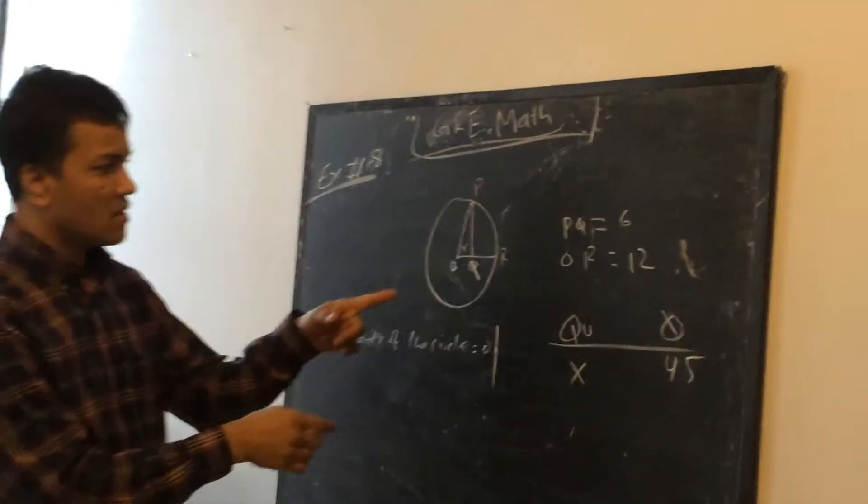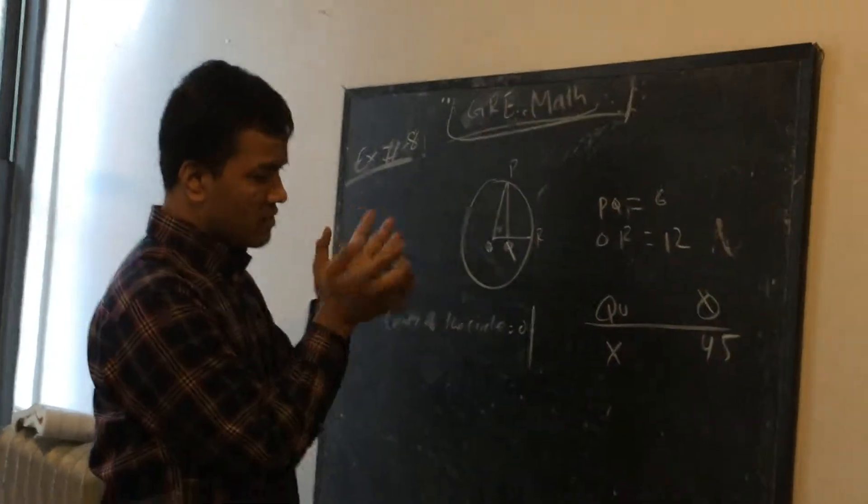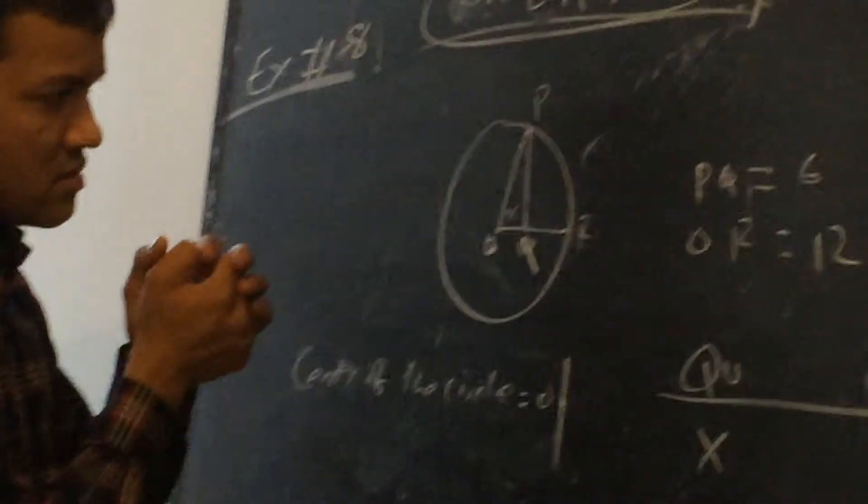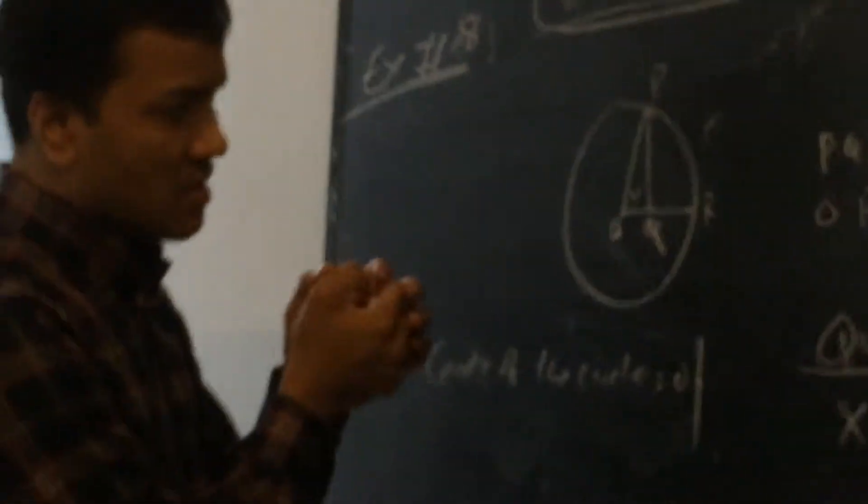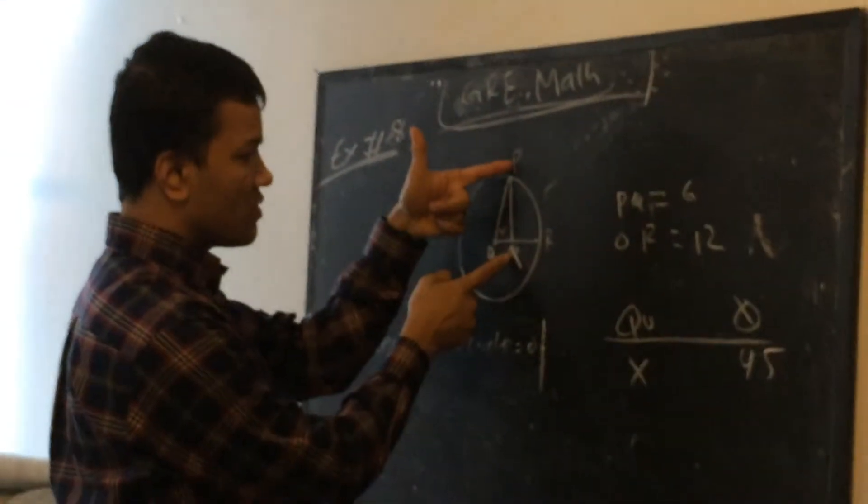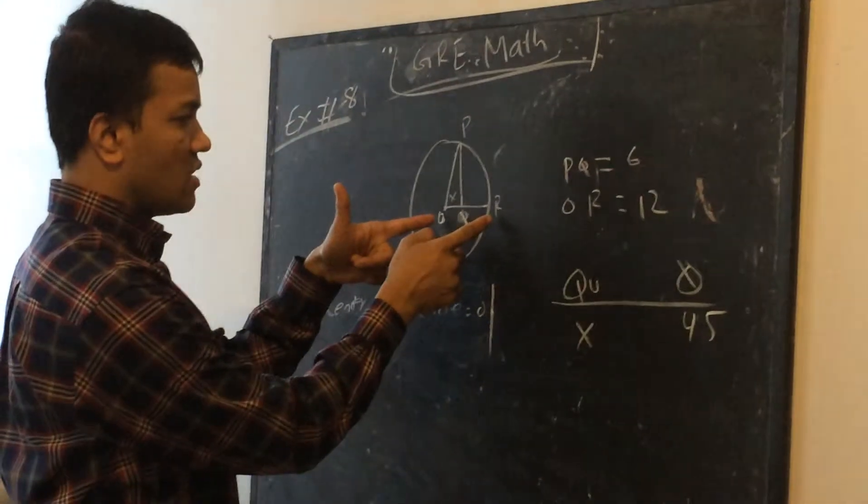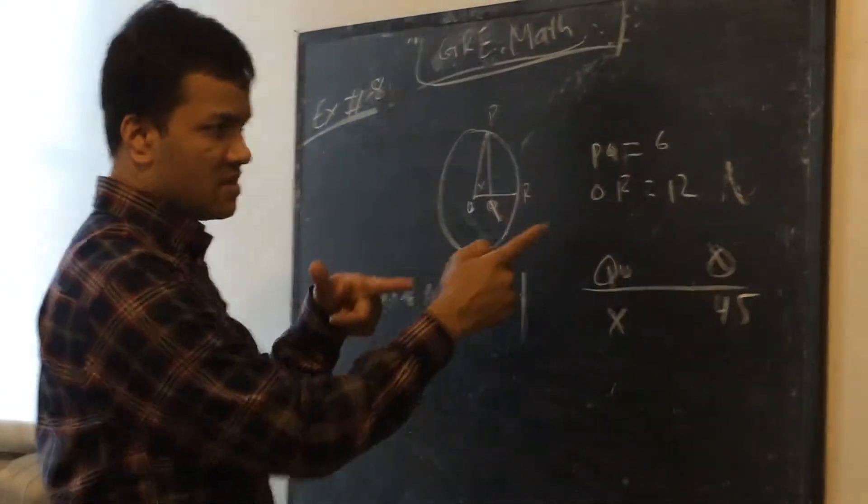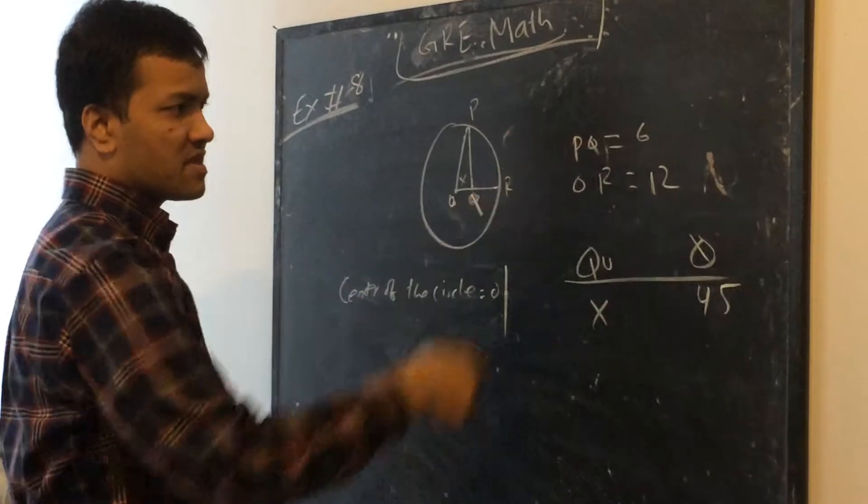The problem is, first you look at the diagram. Has it been drawn to scale? It doesn't look like it's drawn to scale because PQ looks almost the same as OR, but it says that OR is twice as big as PQ.